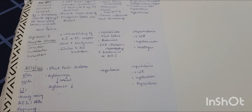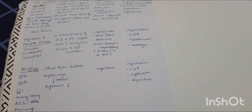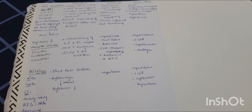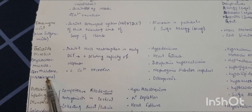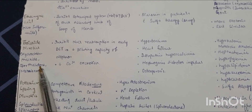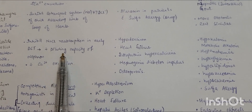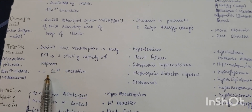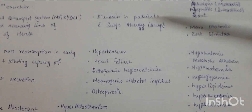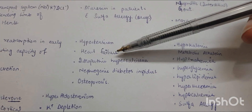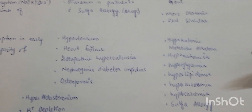I hope you liked my video — please like, share, and subscribe. The next group is thiazide diuretics, which include hydrochlorothiazide, metolazone, chlorothiazide, chlorthalidone, etc. They inhibit sodium-chloride reabsorption in the early distal convoluted tubule, decreasing the diluting capacity of the nephron — hence concentrated urine is formed — and decrease calcium excretion. Clinical uses include hypertension, heart failure, idiopathic hypercalciuria, nephrogenic diabetes insipidus, and osteoporosis.